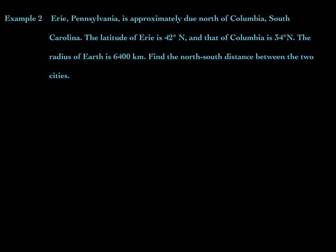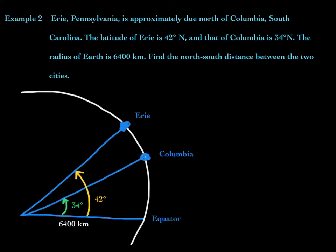Example two: Erie, Pennsylvania is approximately due north of Columbia, South Carolina. The latitude of Erie is 42 degrees due north, and that of Columbia is 34 degrees due north. The radius of Earth is 6,400 kilometers. Find the north-south distance between the two cities. To help understand how to approach this, let's draw a picture. We have the cities of Erie, Pennsylvania, and Columbia, North Carolina. The north mentioned in the problem means north of the equator.